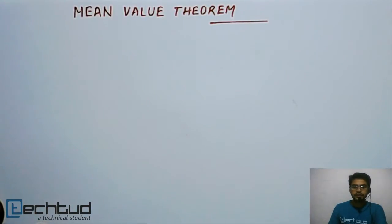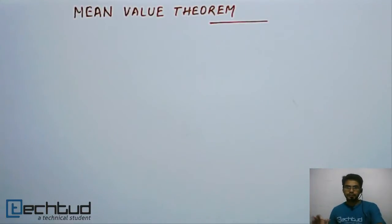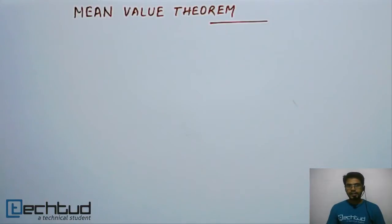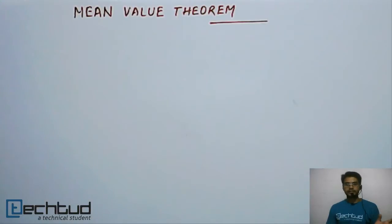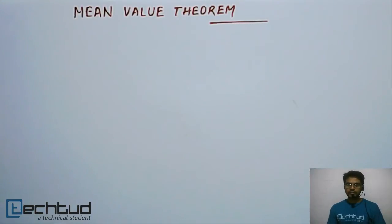In calculus, the Mean Value Theorem states that for a given arc, if it satisfies certain conditions, there will be at least one point in between the two endpoints where the slope of the tangent is equal to either zero or some given value. Basically, we talk about the slope of the tangent at a point between the two given points and the conditions around this.